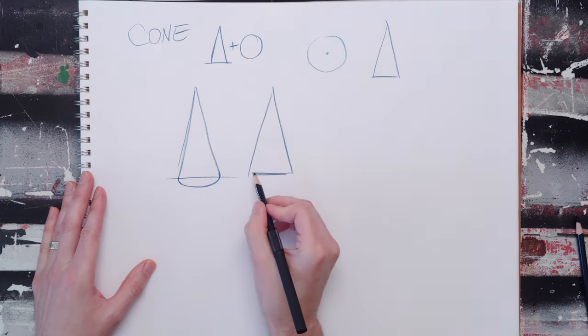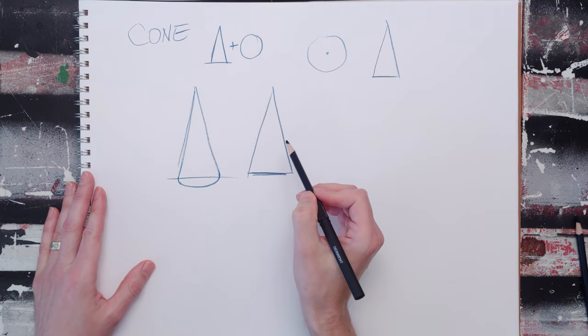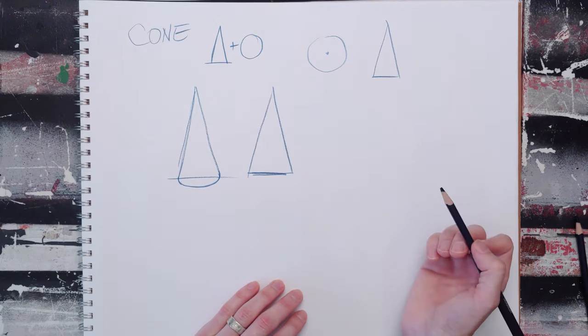Flat, dimensional. Still both cones, but you can tell that this is actually a cone, whereas this basically just looks like a triangle.